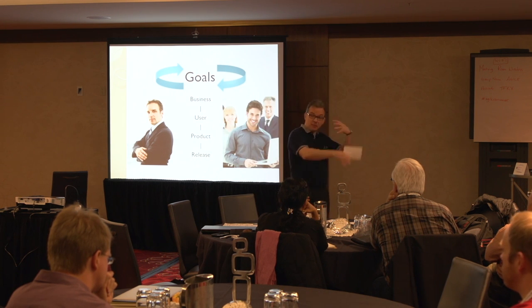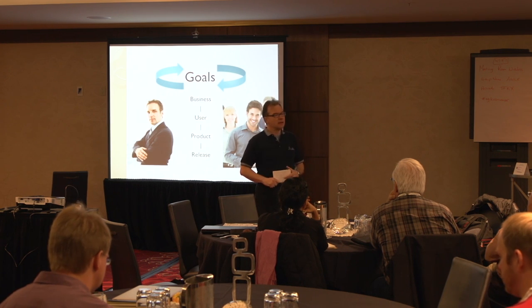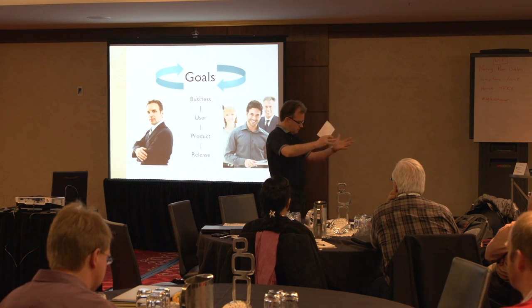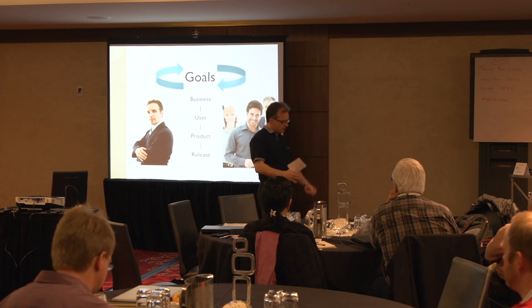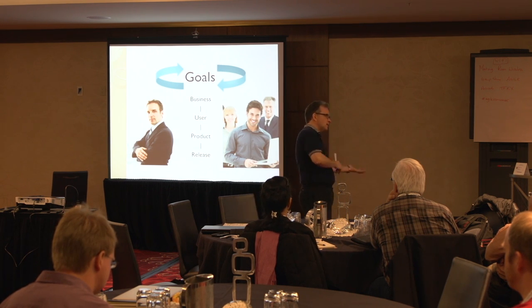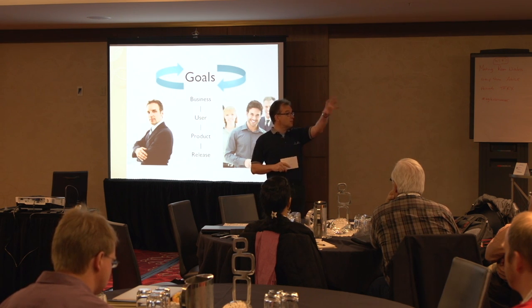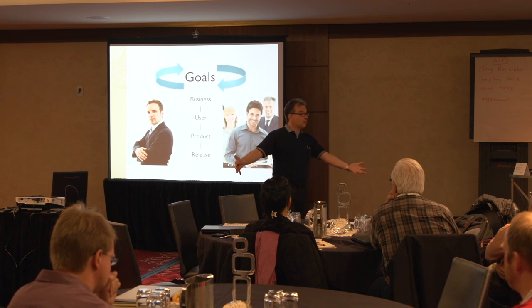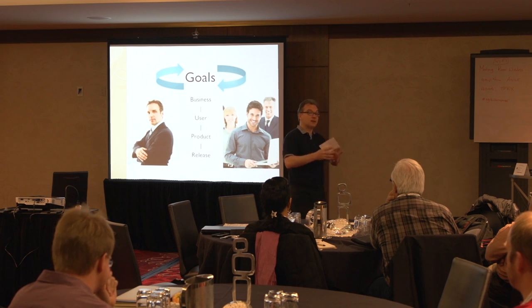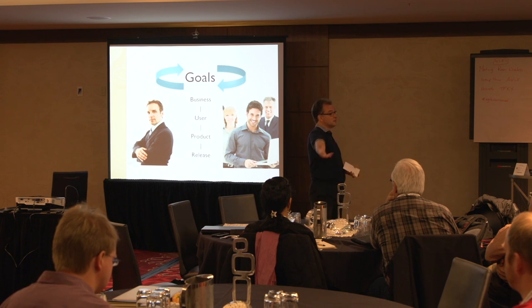Technical teams are very process-focused. They're thinking: I need to have some stories, get them estimated so we can have a release plan, put them in iteration sprints, plan our work and do it. That's their flow. But there's the requirements flow too — what is the focus and priority for my business value? How do I start with that? How do I go from there to a big picture view so I can communicate what the pieces are and how they fit in?